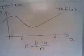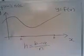we have to divide the area into an even number of strips with width h equals b minus a over n.